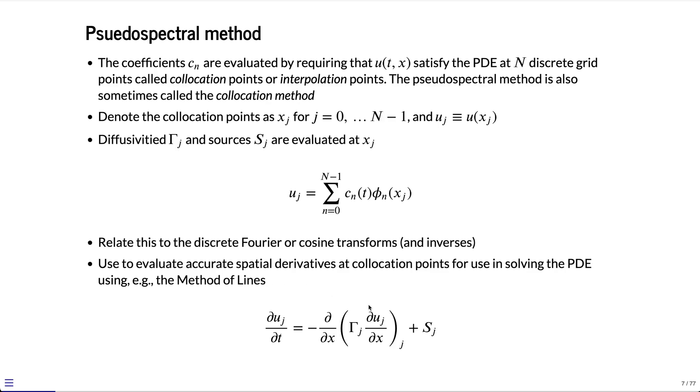We use the spectral method to evaluate these derivatives and do so in a manner that's high order. Once we know the derivatives at the grid points, we can step this solution in time to evolve u at each grid point and at each time. Everything we're going to talk about, for the most part, is related to evaluating the derivatives here and doing it in an accurate way.